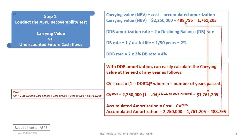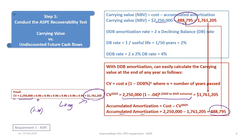If unsure of the shortcut formula, you can verify the carrying value the long way by starting with the cost of $2,250,000 and multiplying by 0.96 (i.e., 1 − 0.04) six times consecutively, yielding $1,761,205. This confirms the carrying value. Working backwards from cost minus carrying value gives accumulated amortization of $488,795.